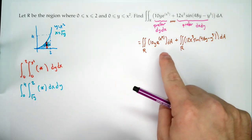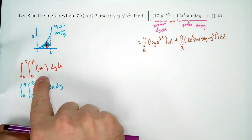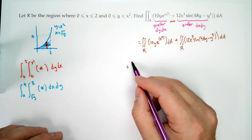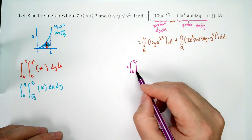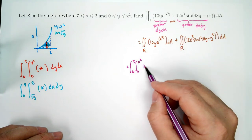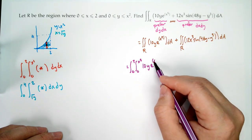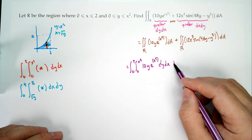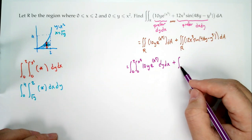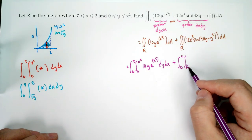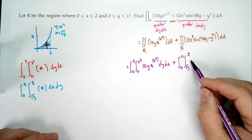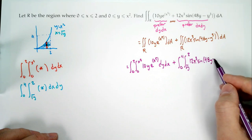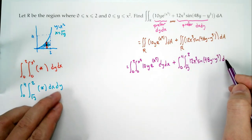The first integral, we prefer dy dx, so: ∫₀² ∫₀^(x²) 10y·e^(x⁵) dy dx. The second integral uses the second choice: ∫₀⁴ ∫_(√y)^2 12x³·sin(48y − y³) dx dy.